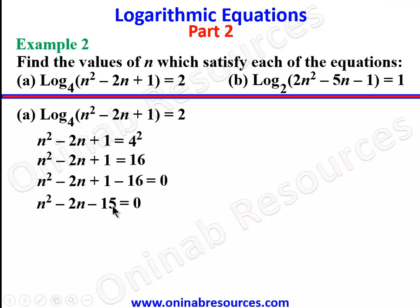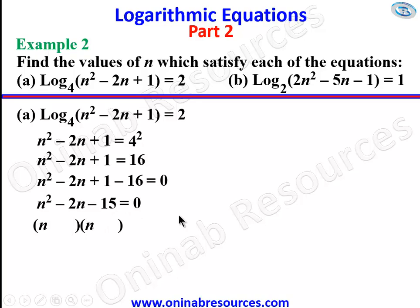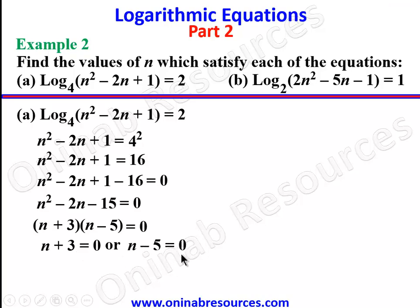Since positive 1 minus 16 gives negative 15, we factorize. Opening two pairs of brackets with n in each, we look for two factors of negative 15 whose sum gives negative 2 — that's negative 5 and positive 3. So we have (n + 3)(n − 5) = 0. Equating to zero: n + 3 = 0 or n − 5 = 0, giving n = −3 or n = 5. That's the end of Example 2a.